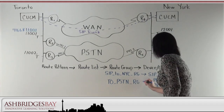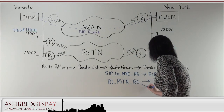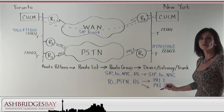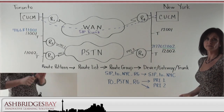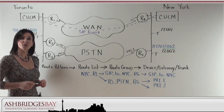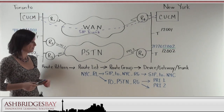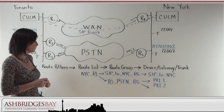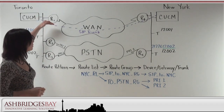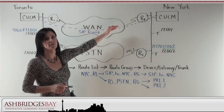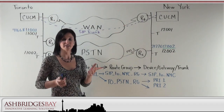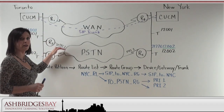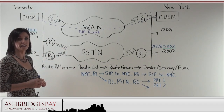I'm going to include both PRIs in the route group because the dialing is the same — we can simply cycle around and choose the channel we are going to use. So we are going to build a route list for calls to New York City, and call it the New York City route list. We want our first choice for calls to New York to go over the SIP trunk through the data network. But if the data network is down, then we want those calls to be routed through the PRIs to the PSTN.